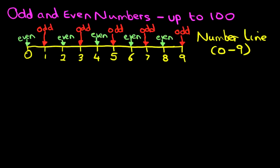So those are all the odd and even numbers as we populated on the number line.